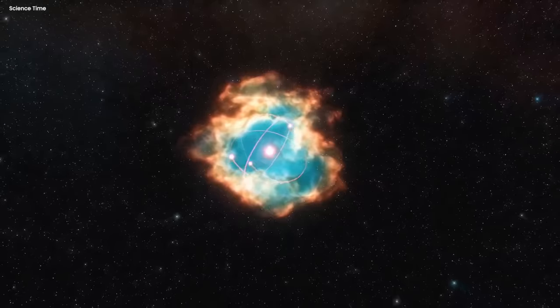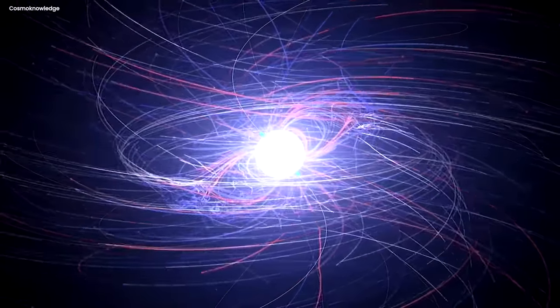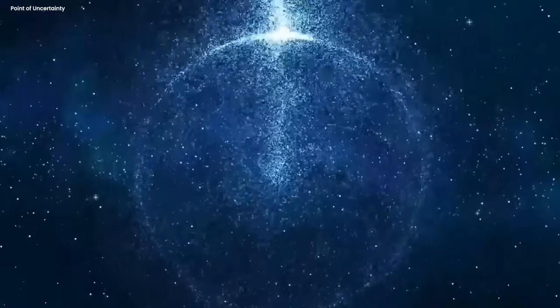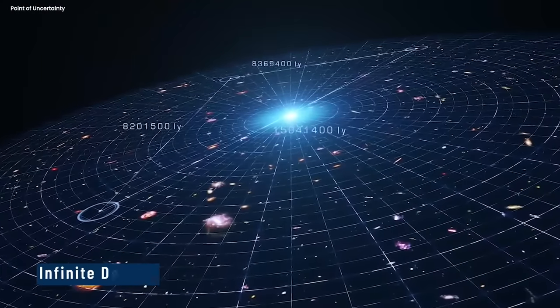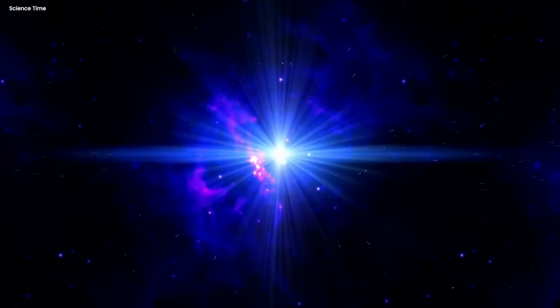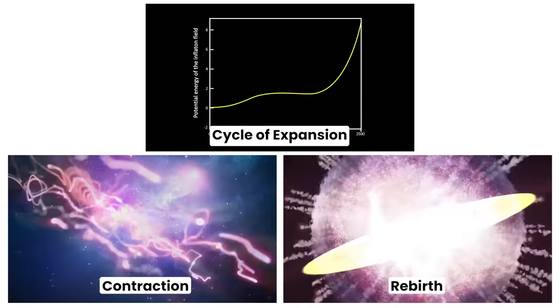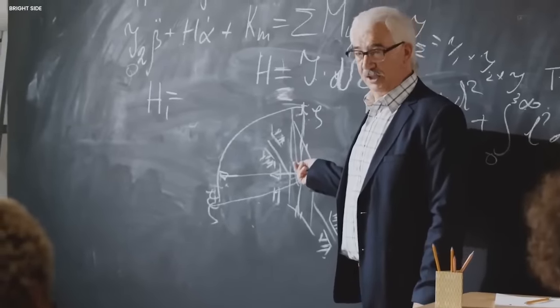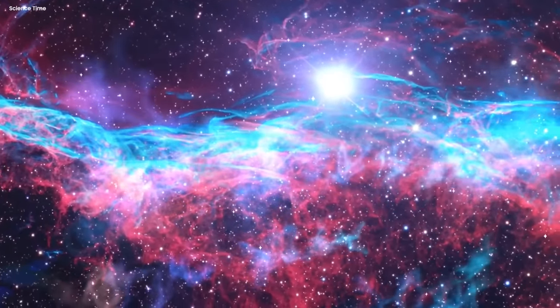As the expansion slows down, the universe enters a phase of contraction known as the Big Crunch. During this phase, the universe becomes increasingly compressed and denser, leading to a highly compact state. Eventually, all matter and energy in the universe are concentrated into a singularity, a point of infinite density and temperature. Following the Big Crunch, a new cycle begins with another Big Bang. The process repeats itself, leading to an eternal cycle of expansion, contraction, and rebirth. Each cycle is thought to be similar in terms of the physical laws and properties governing the universe, allowing for the repetition of cosmic evolution and the emergence of galaxies, stars, and other structures.